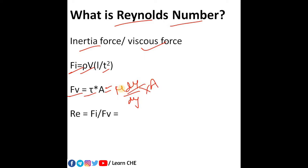So this du is a velocity and this dy is simply distance. So I can write du as V, that is velocity, and that y I can write as L.